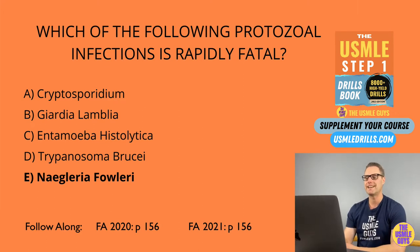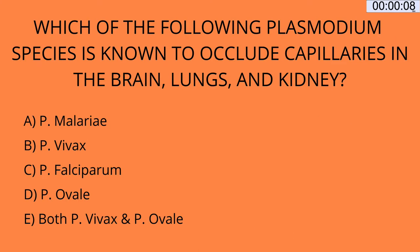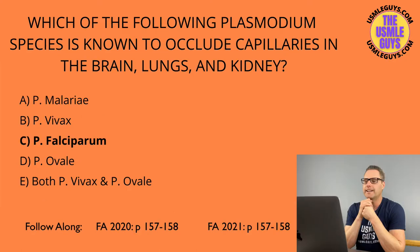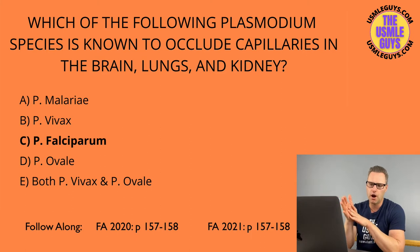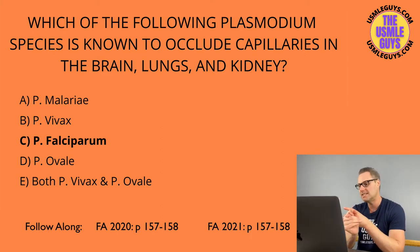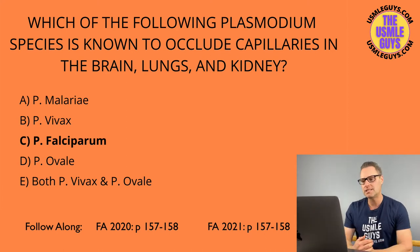Let's move on to our next question — hit that pause button and come back when you have the right answer. The correct answer here is C, Plasmodium falciparum. The two hematologic infections we're going to cover are the Plasmodium species, which causes malaria, and Babesia, which causes babesiosis. Babesia causes fever and hemolytic anemia, and severe cases can even lead to asplenia.